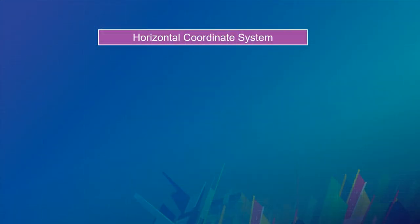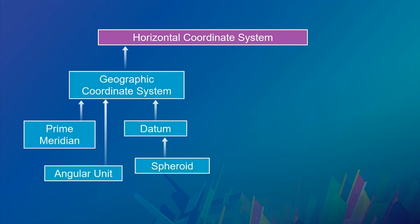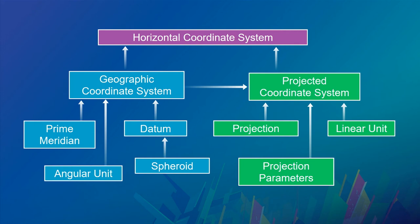Let's look at the parts of a coordinate system as defined at Esri. For a geographic coordinate system, the Earth model is a sphere or spheroid/ellipsoid. Working left to right, we have a prime meridian, an angular unit, and a datum — the datum is based on a spheroid or ellipsoid. A projected coordinate system inherits that entire geographic coordinate system and adds a projection name linking to an algorithm, any parameters needed by that projection, and a linear unit.